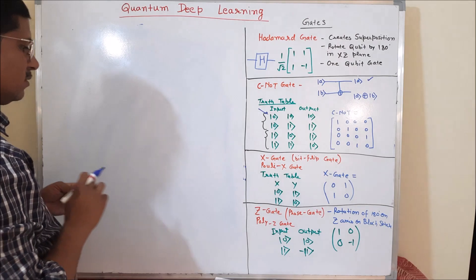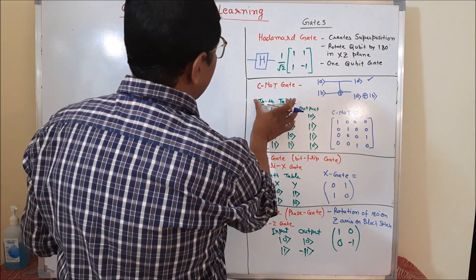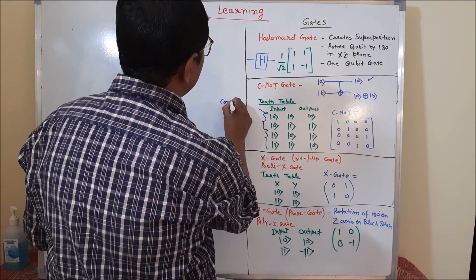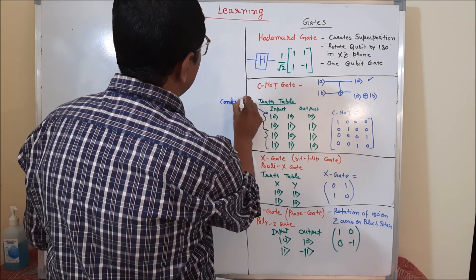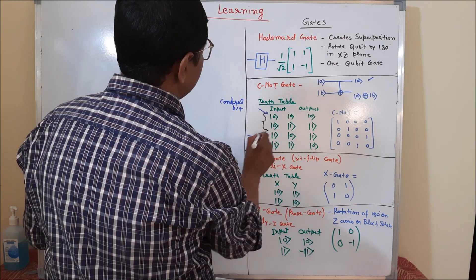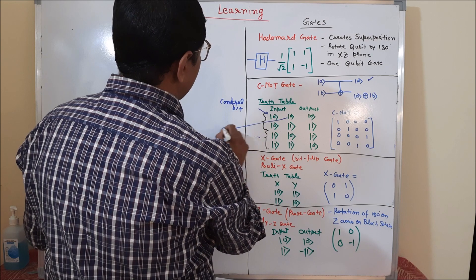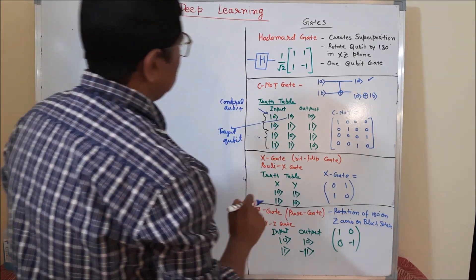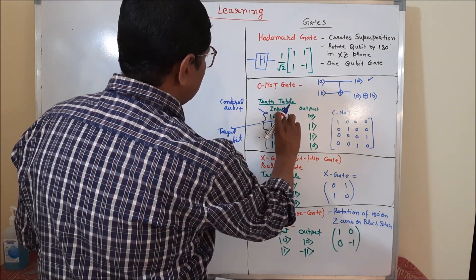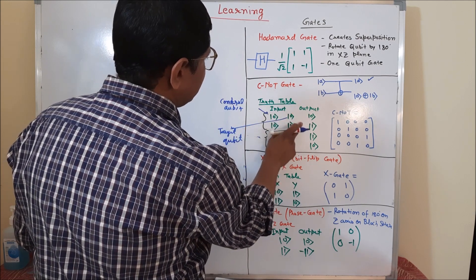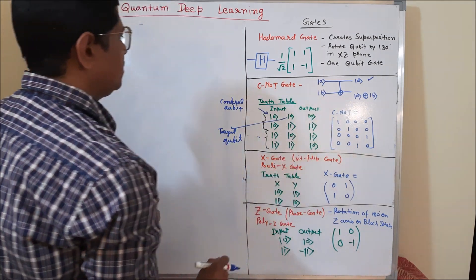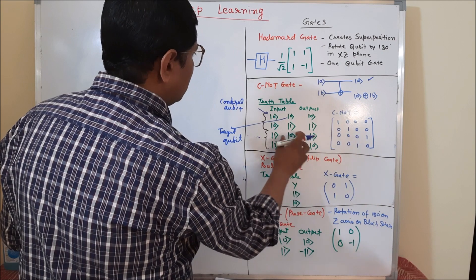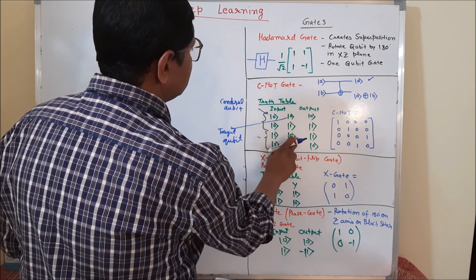Let us see how the CNOT gate actually works. Here we have a truth table for the CNOT gate. This is the control qubit part and this is the target qubit part. When we apply the CNOT gate and the control qubit state is 0, there is no change in the target qubit output — it remains the same. When the control qubit state is 1, it flips the output of the target qubit states: 0 becomes 1, and 1 becomes 0.